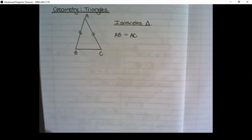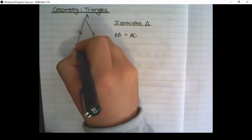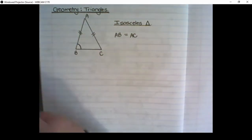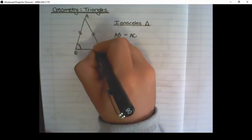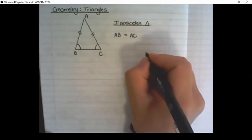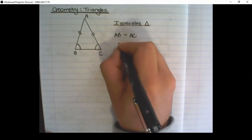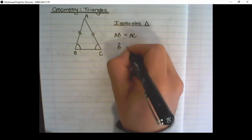Another property of an isosceles triangle is that it has a pair of angles that are equal. The angle B would be equal to the angle C. And how we would write that is angle B is equal to angle C.